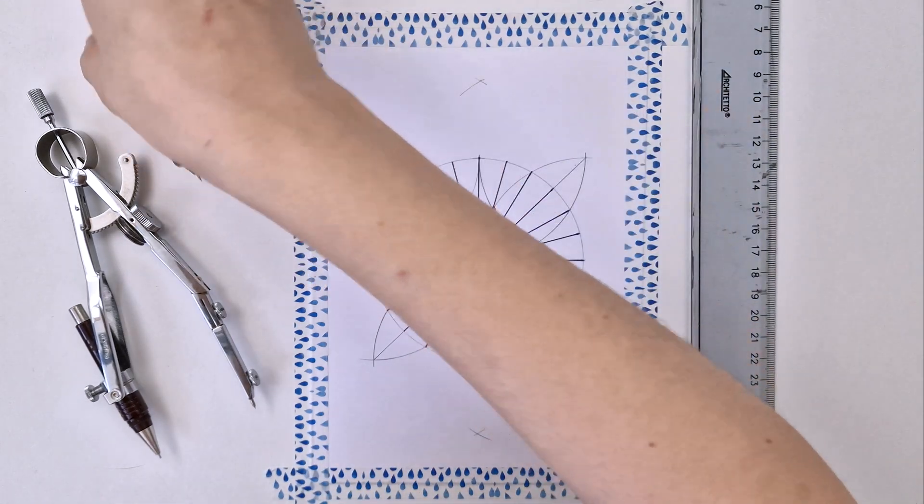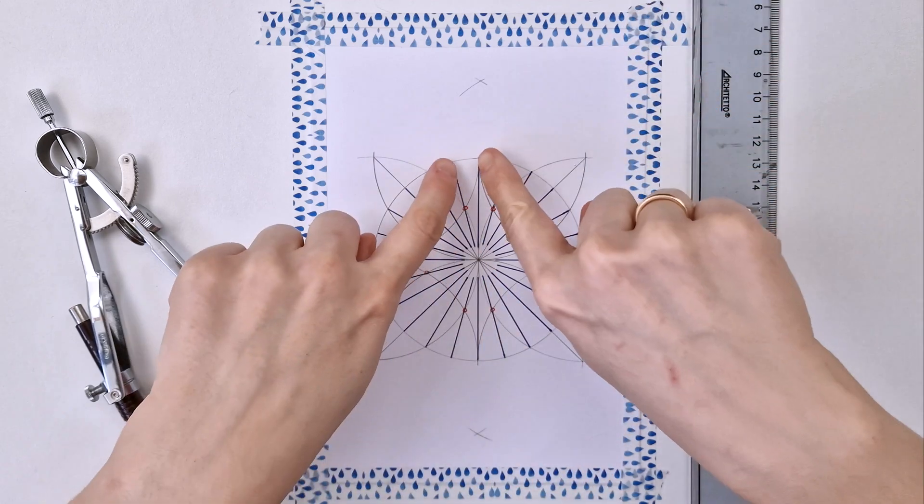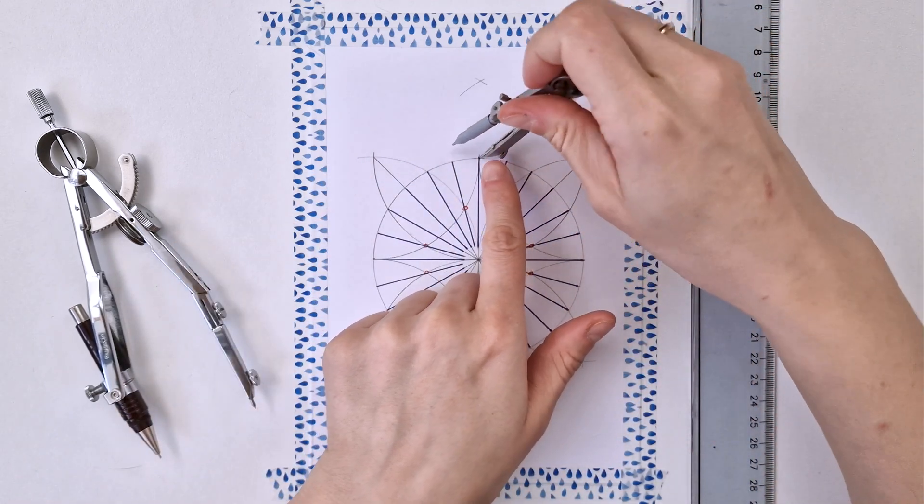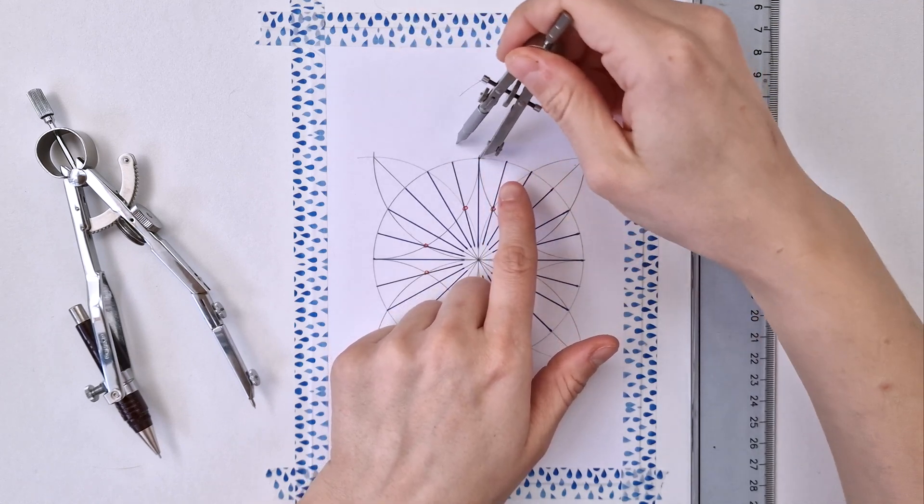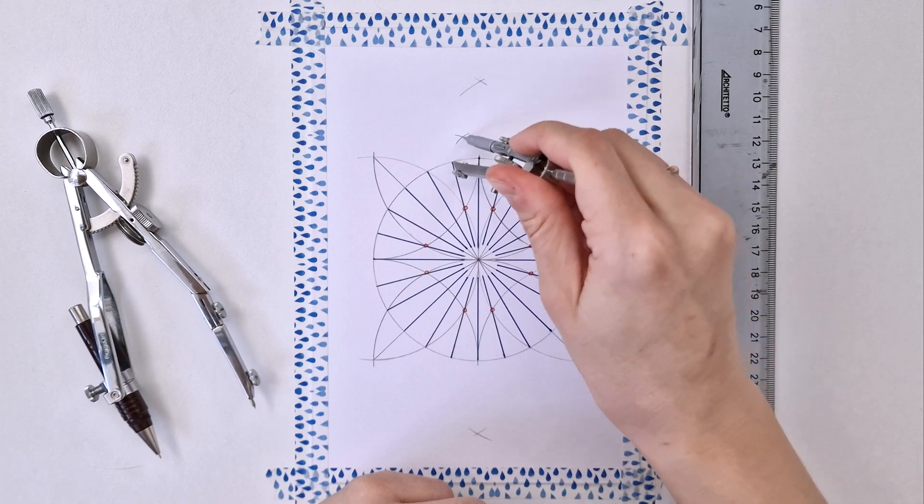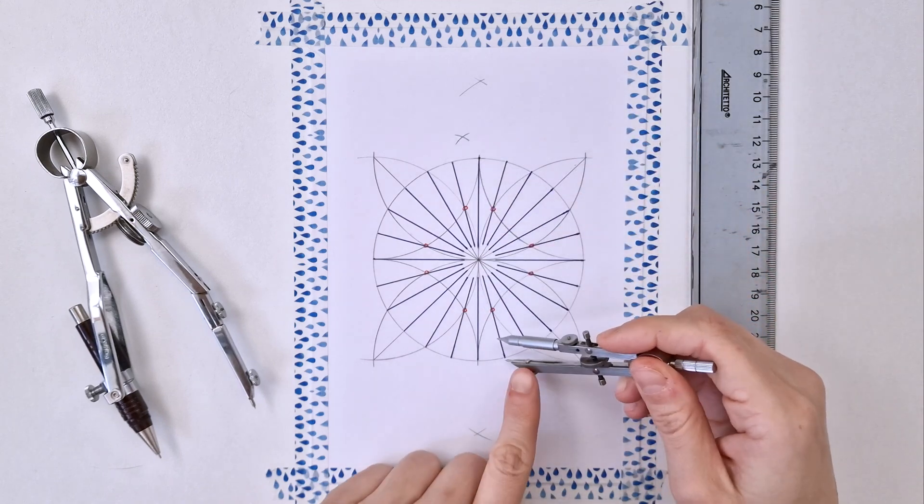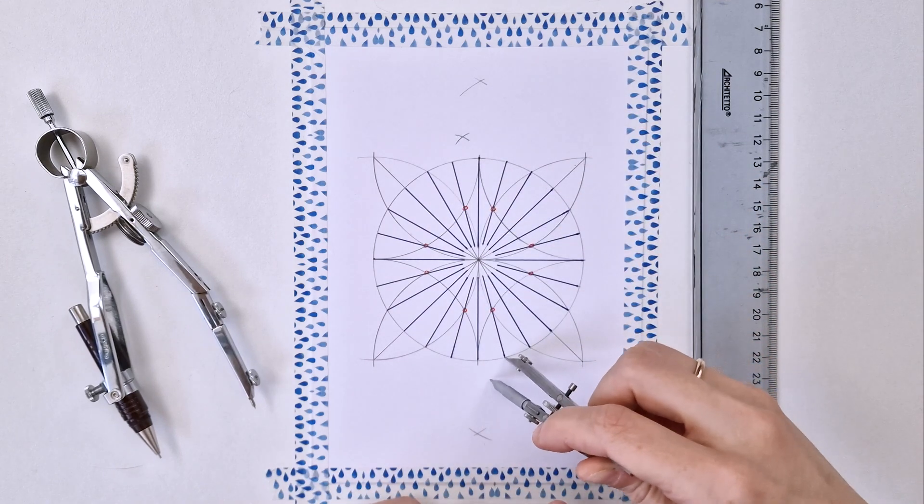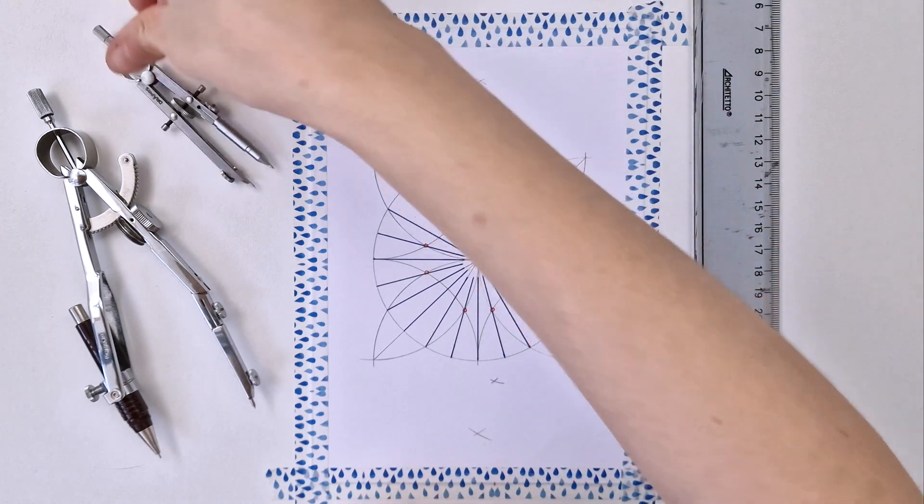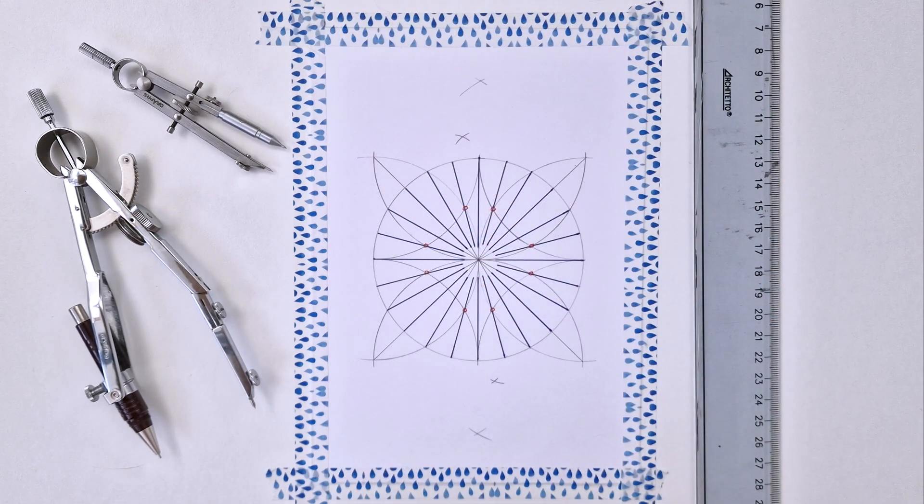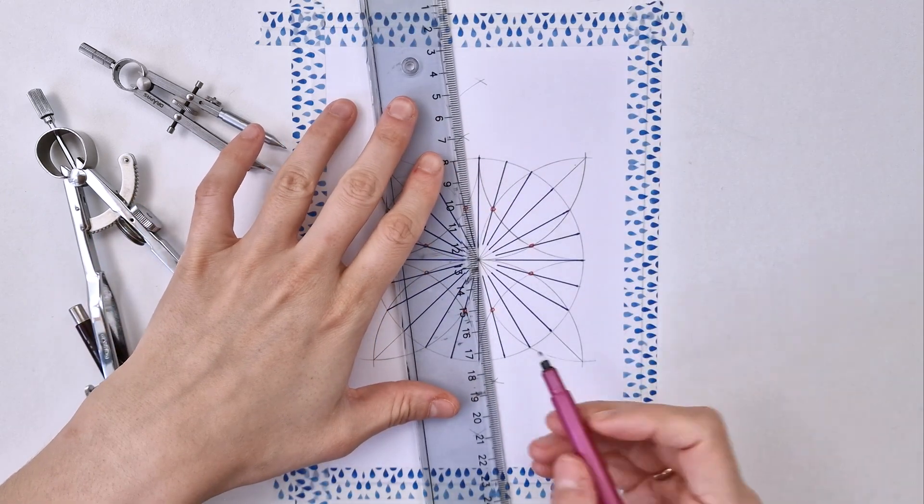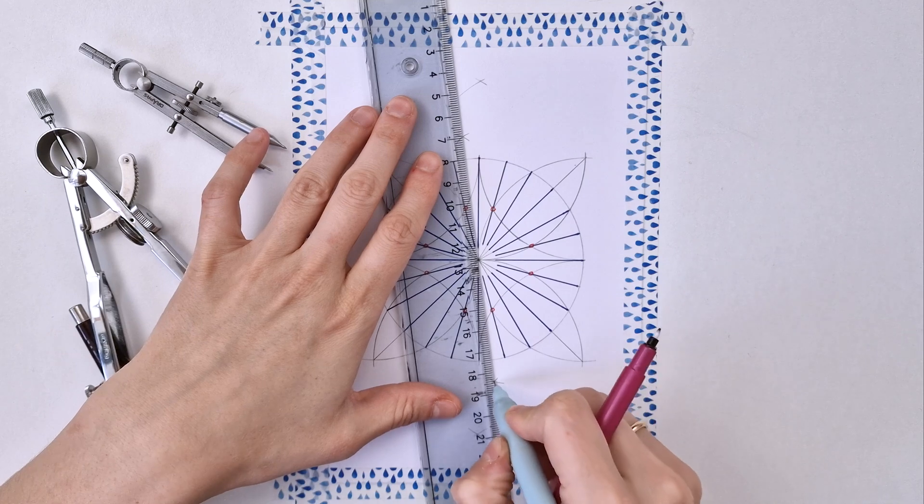Now that I have my 24-fold division, let me show you how to divide it into 48. If you take the distance between these two, make a mark, point the compass on one point and then on the other, and do the same on the opposite side like this, you will find the center point.